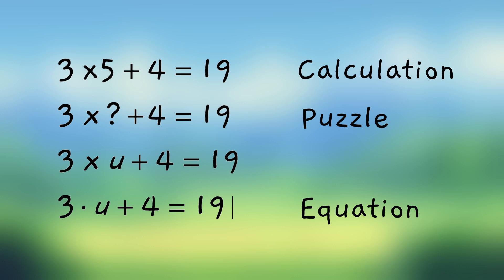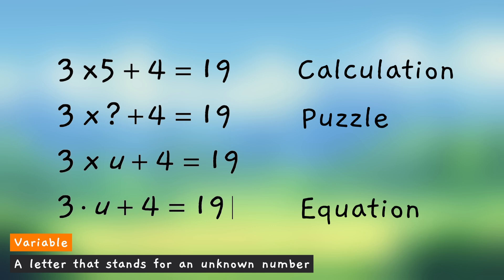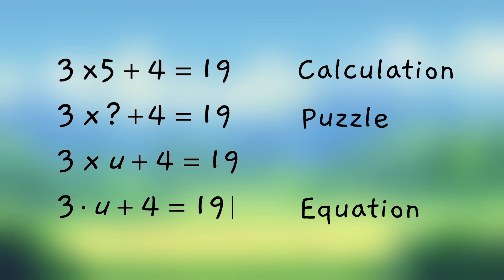And we call the letter U a variable. This is the algebra term for a letter that stands for an unknown number. So this is one place in algebra where you will use letters to stand for numbers. Here we have a math puzzle, which we call an equation because there's an equal sign. And there's an unknown number, and we're using a letter U to stand for that. And that letter is called a variable.